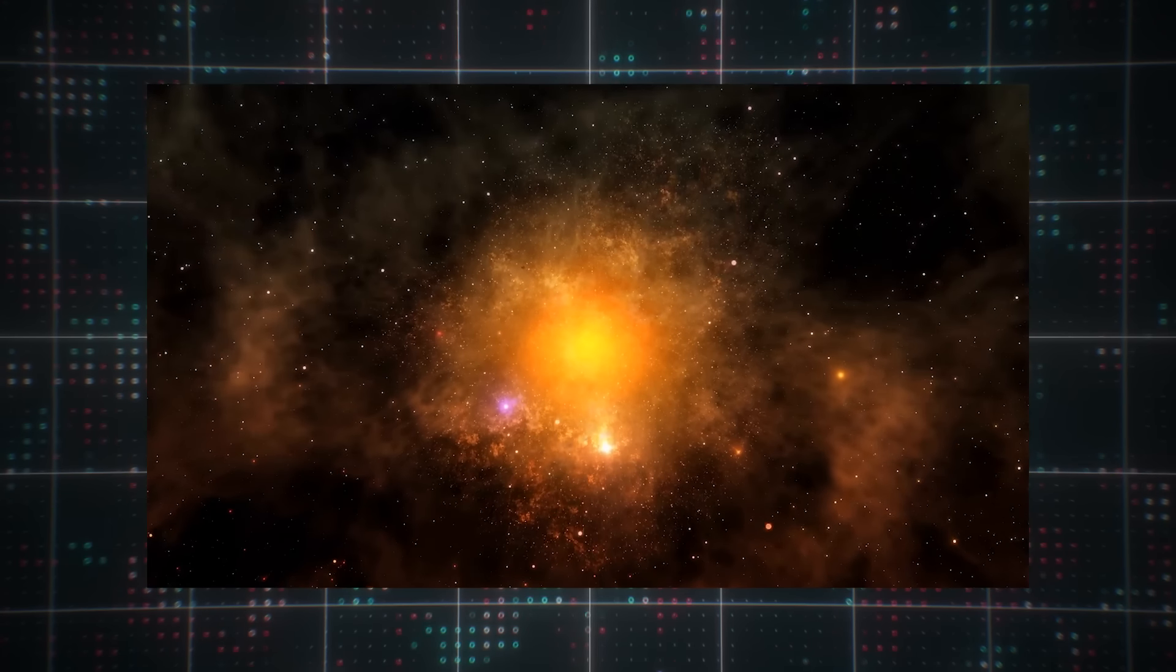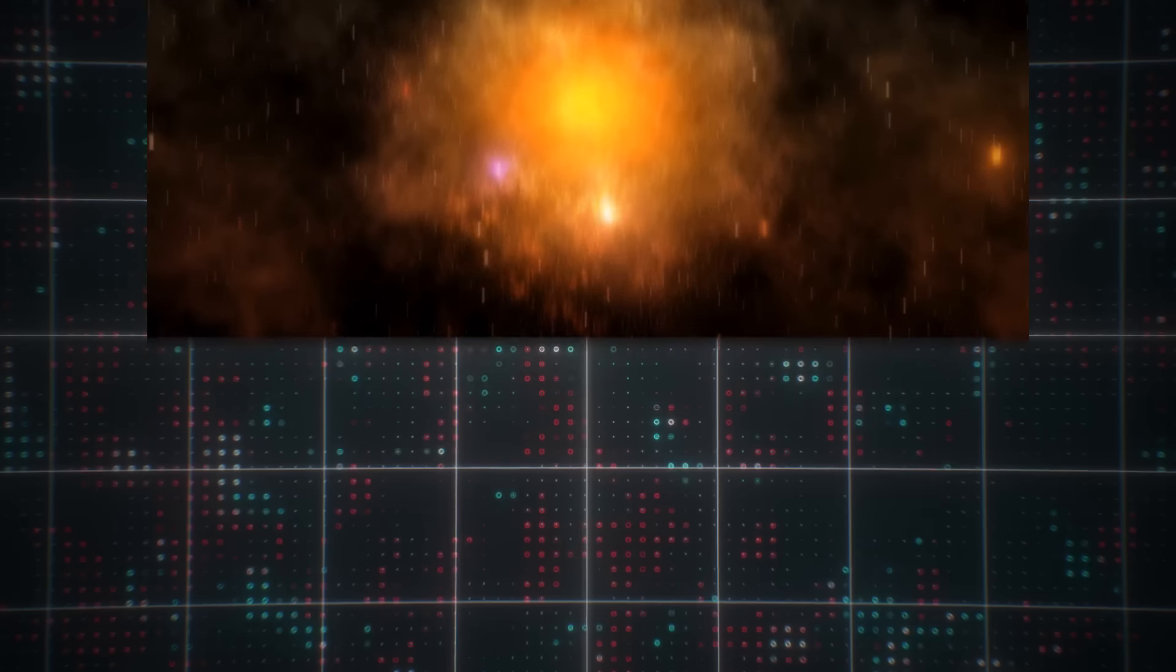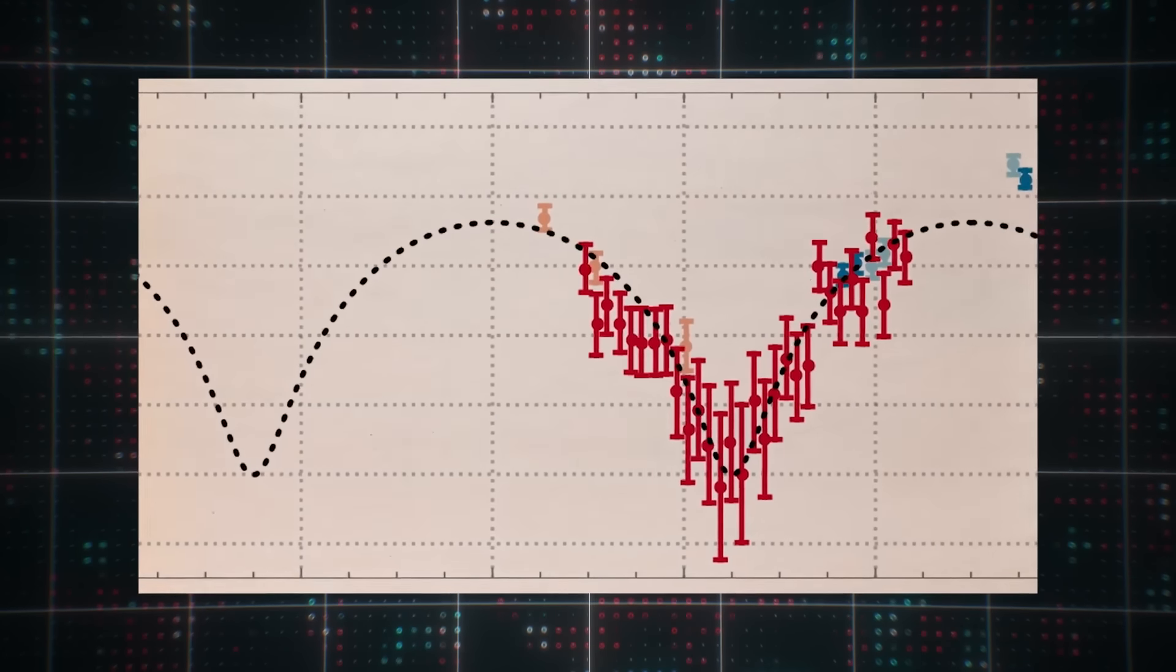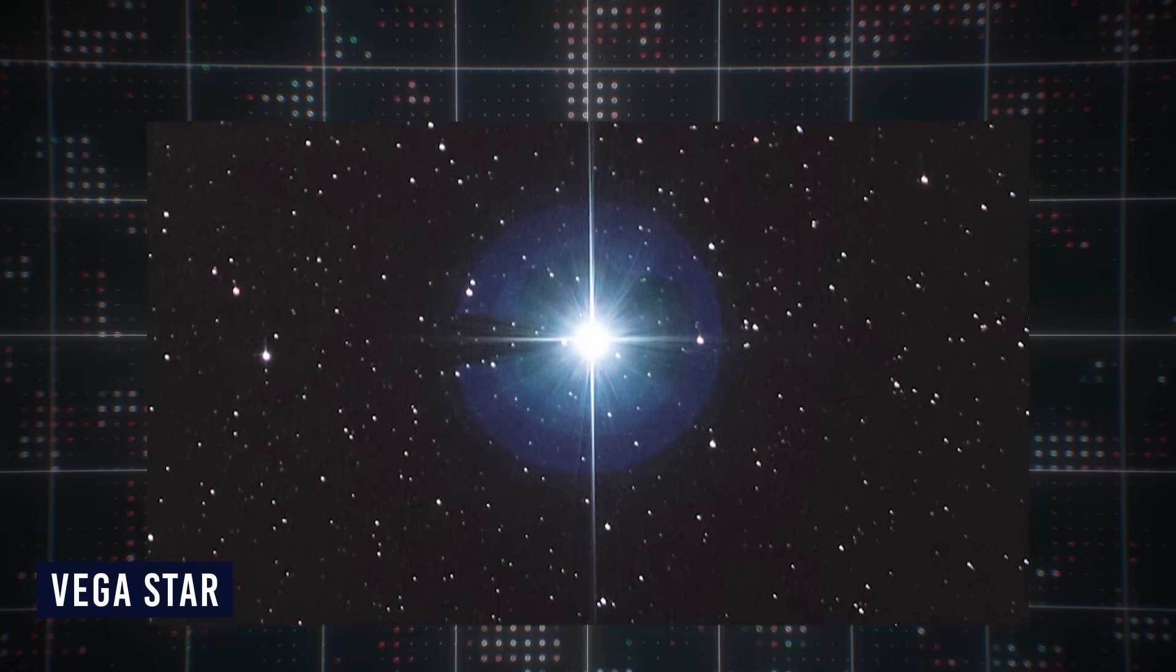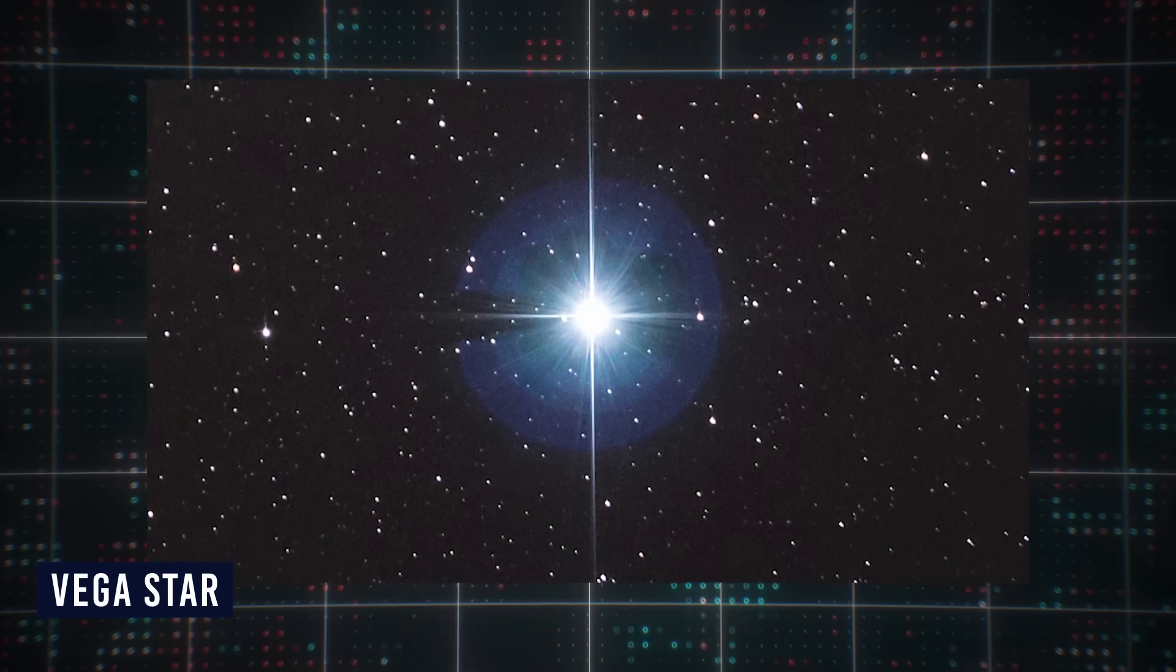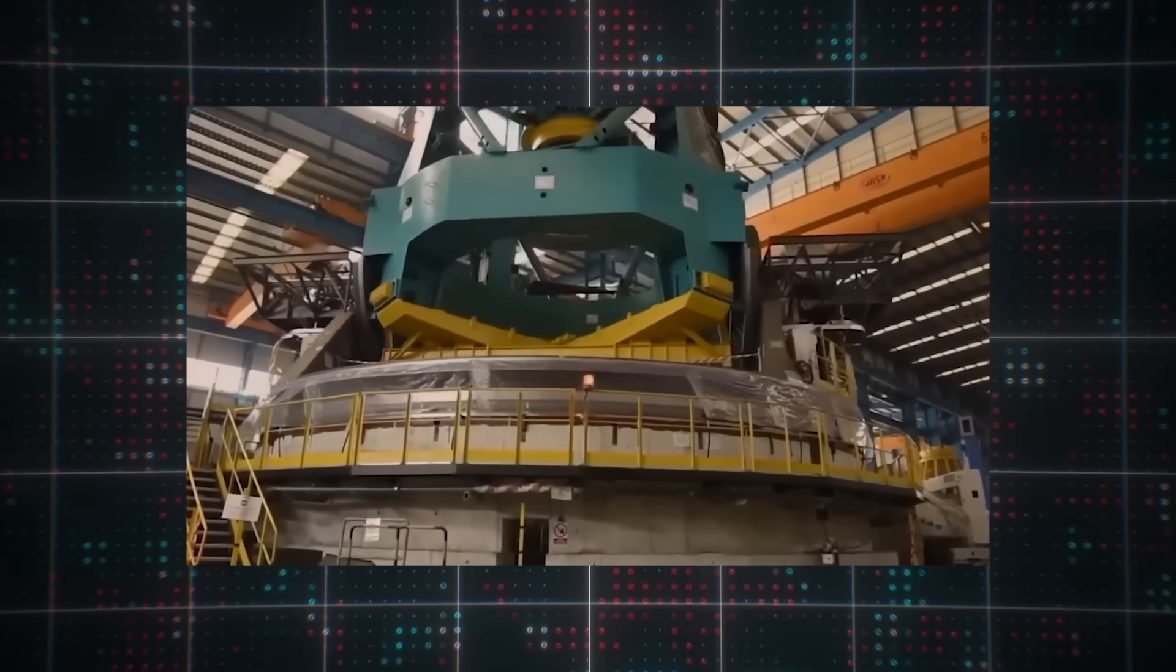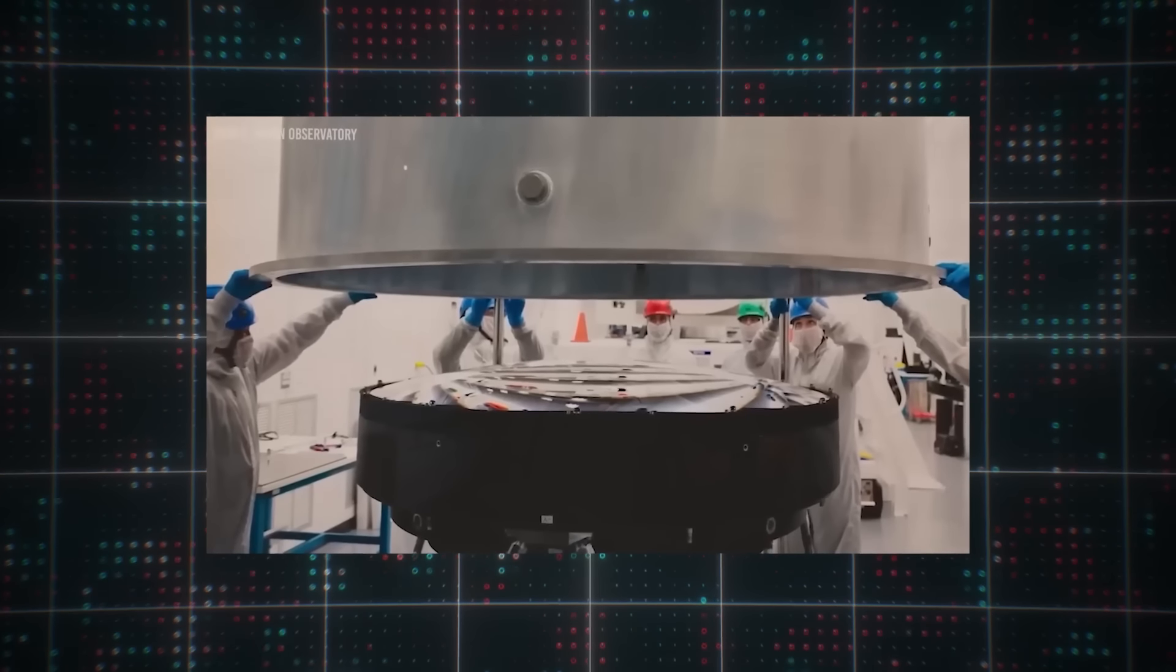As time passed and Oumuamua moved farther away from our solar system, it became increasingly challenging to gather additional data. Eventually, it became too faint and distant to observe effectively, leaving many questions unanswered. Oumuamua, the mysterious object originating from far beyond our solar system, continues to perplex scientists as they look to learn its true origin. Initially, experts speculated that Oumuamua may have come from Vega, a brilliantly luminous star within the Lyra constellation. Vega's collection of debris disks made it a likely candidate for the origin of Oumuamua. According to this hypothesis, Oumuamua would have embarked on an astonishing 60,000-year journey to reach our solar system.